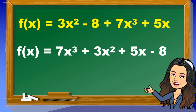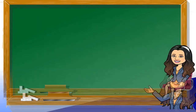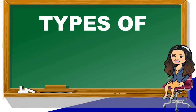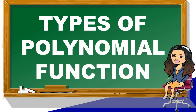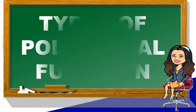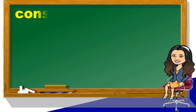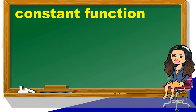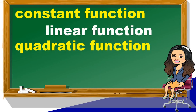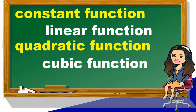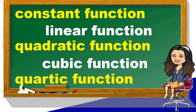I have provided several examples on my previous videos regarding this kind of problem. I have placed the link in the description box for you to find it easily. Now let's proceed to our topic: the types of polynomial functions. Here are some common types: constant function, linear function, quadratic function, cubic function, and quartic function.